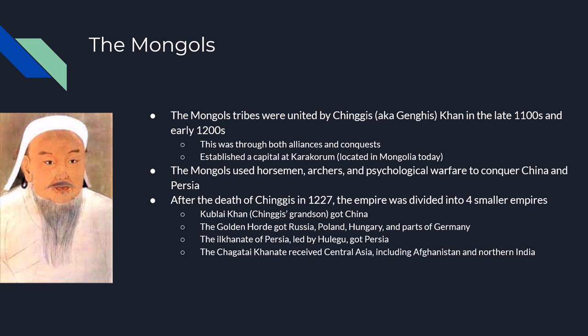Genghis Khan gives people religious freedom, is supportive of international trade, and exempts the poor from taxation. He encourages literacy amongst his people and even had a functioning mail system. Each mail messenger would ride about 25 miles from one station to the next, and each relay station had households that serviced it, kind of like a post office today. All total, his postal service had 1,400 postal stations, 50,000 horses, 4,000 carts, and 6,000 boats.